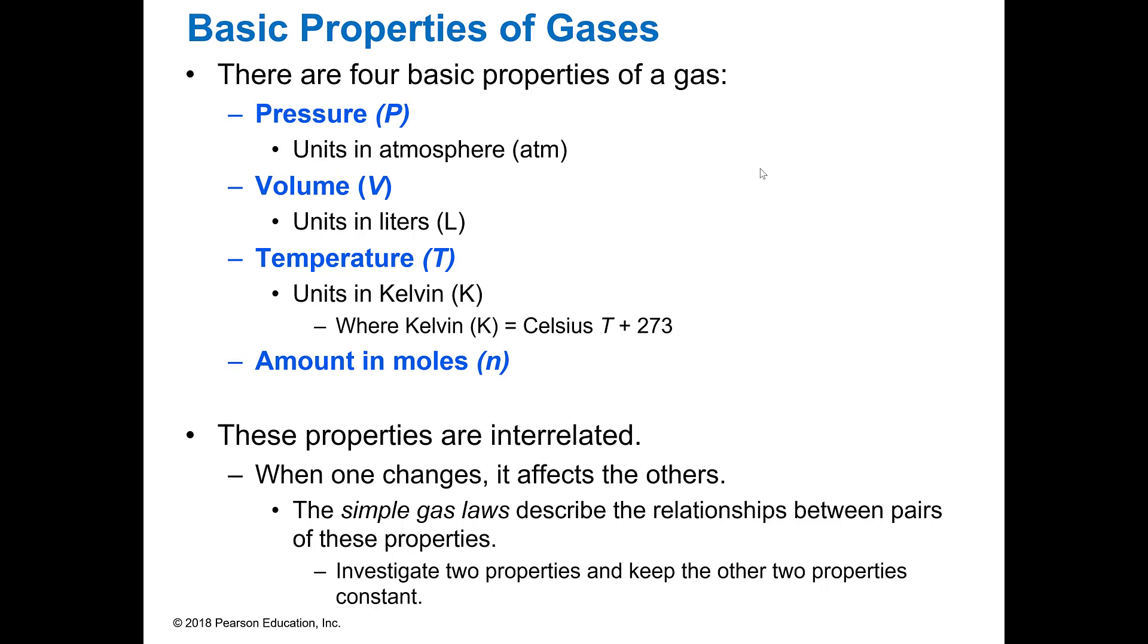So there are four basic properties of a gas. You have its pressure, how much volume it's in, what temperature it's at, and then how much you have of it or how many moles you have. And so pressure we say is P, volume, and these are capitals, V, and temperature is T. Please note temperature is always going to be in Kelvin.